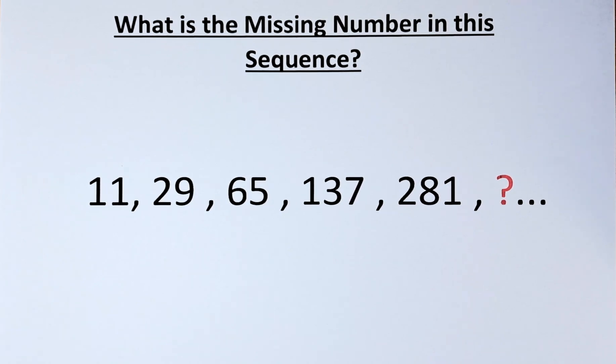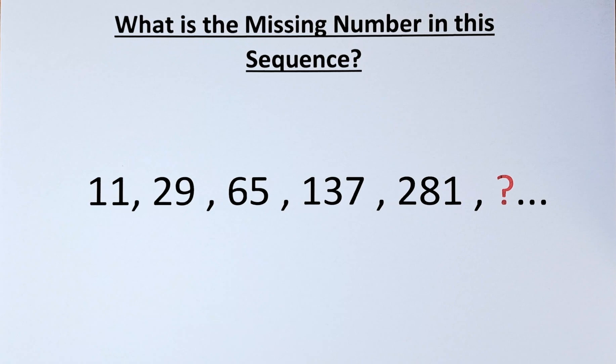Welcome back. This is the solution to find the missing number in this number sequence. The numbers are 11, 29, 65, 137, 281 and a question mark. If you can see, the number is more or less like doubling each time. And then that is how we are going to solve this.